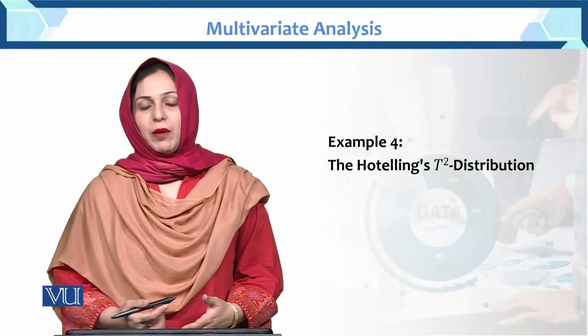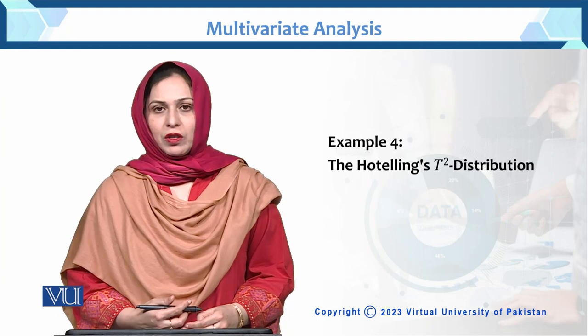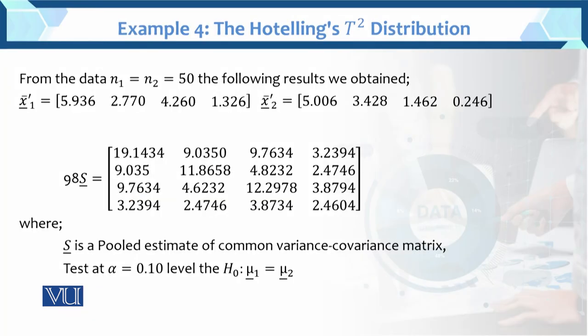This is example number 4 for two-sample Hotelling's T-square distribution. For the two-sample case, n1 equals n2 equals 50. We have 50 sample values. The following results were obtained: here is the mean of the first sample and this is the mean of the second sample.